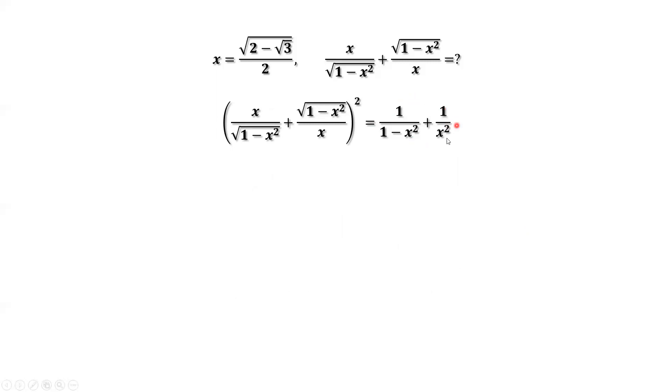We consider the common denominators of the right-hand side. Then we have x squared plus 1 minus x squared divided by x squared times 1 minus x squared. x squared minus x squared are cancelled out. x squared equals 1 over x squared times 1 minus x squared.